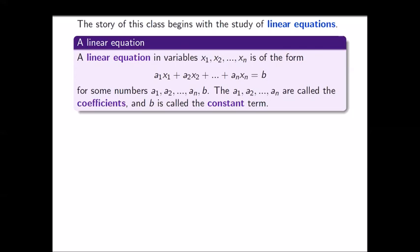In other words, if a number is multiplied to a variable it's a coefficient of that variable, and a number that just stands alone is the constant term.